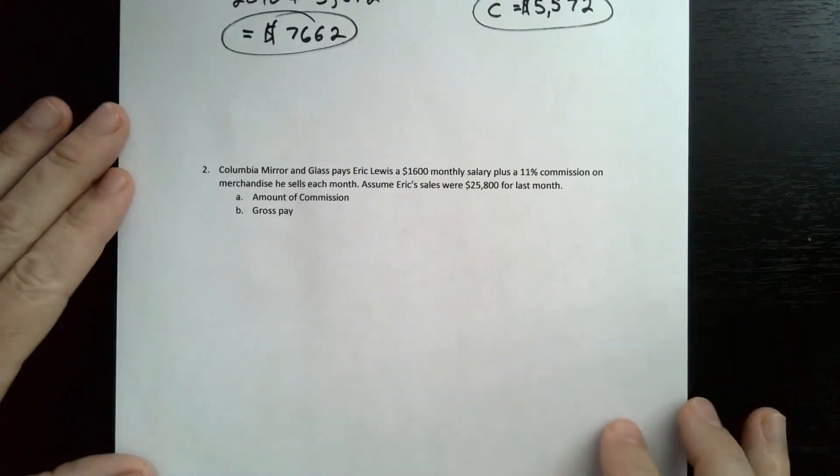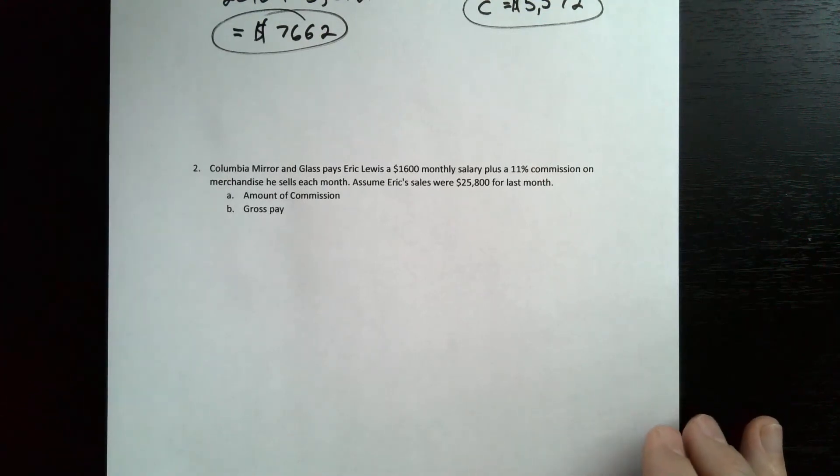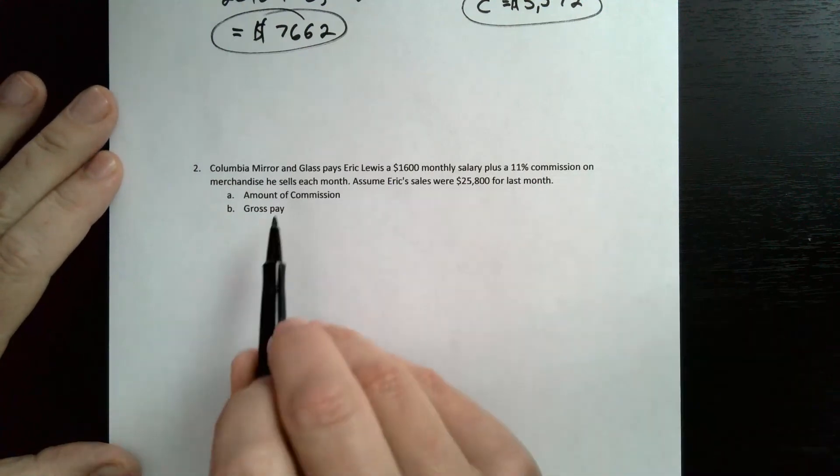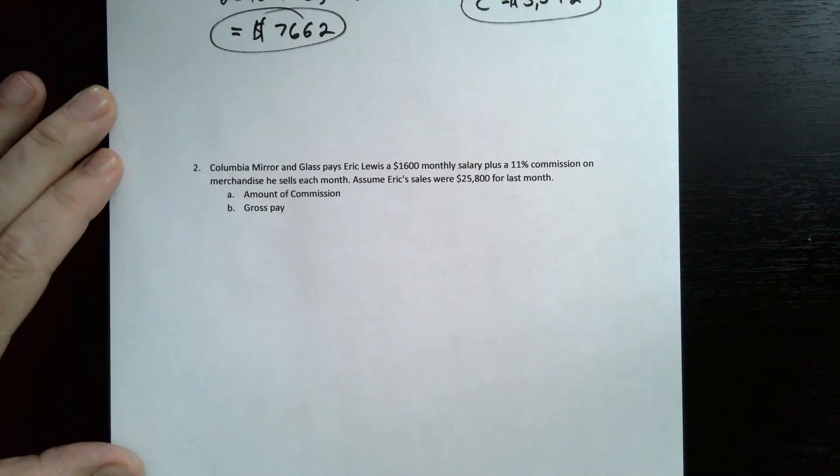Next problem. Columbia Mirror and Glass pays Eric Lewis $1,600 a month, or monthly salary, plus an 11% commission on merchandise he sells each month. Assume Eric sells worth this much, $25,800.